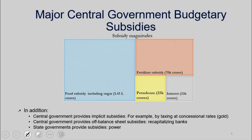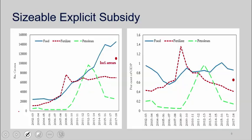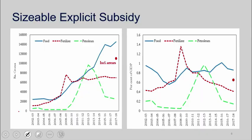What is a subsidy? What are the major central government subsidies, and what is not captured in the central government budget alone? If you look at the time pattern of the three major subsidies, the big change is that the oil subsidy was the largest subsidy at the time when oil prices peaked. The food subsidy was lower, but then with the implementation of the NFSA it's been ramped up, and the fertilizer subsidy has been kind of flat. I always like to look at it as a share of GDP.